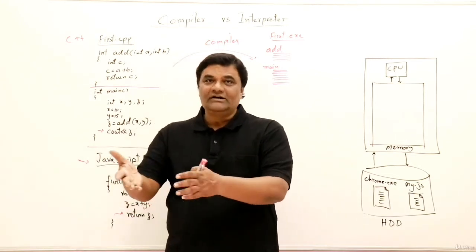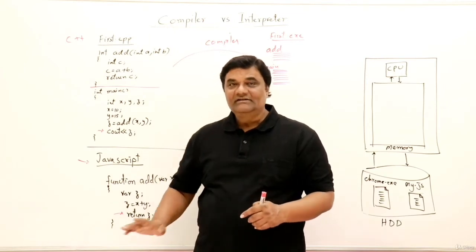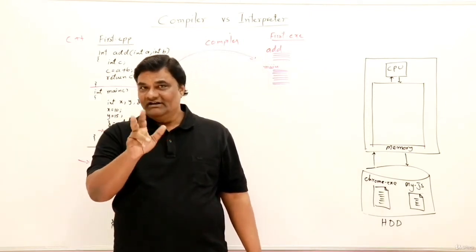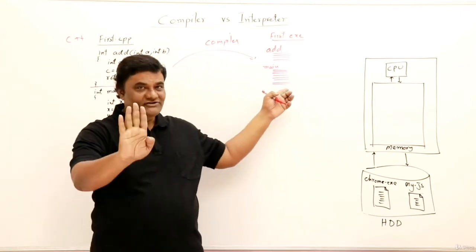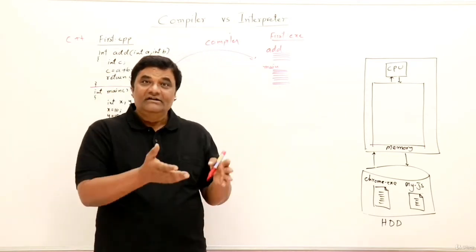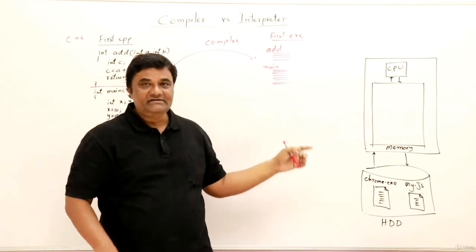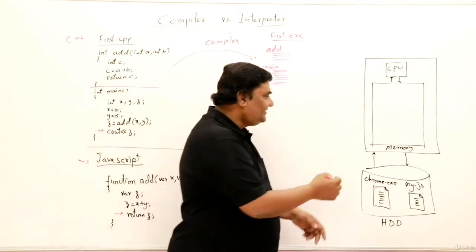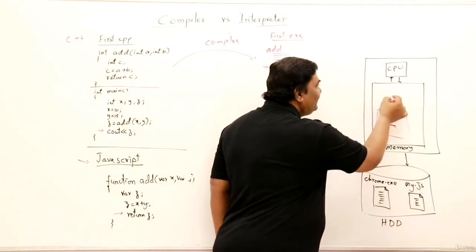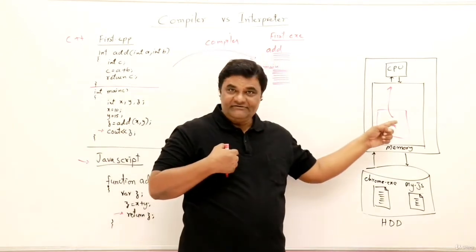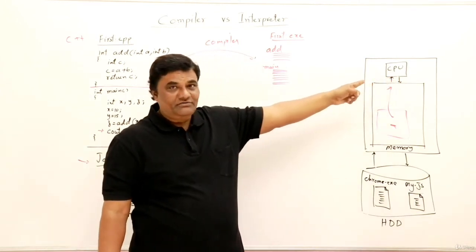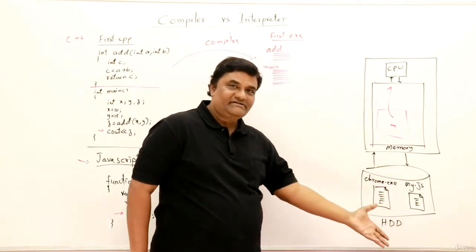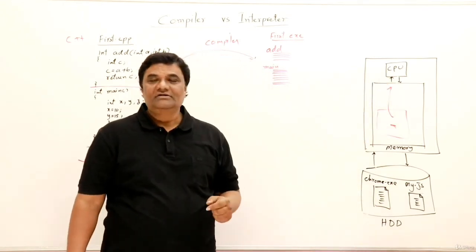Second method: every time you want to prepare the dish, you come to me and I translate line by line — 'take a vessel of this size, take these ingredients, boil the water' — and you execute each step as I translate. You are not independent; I must be there every time. This is like an interpreter. In the compiler case you have the English copy and don't need me again; in the interpreter case I must be present every time.